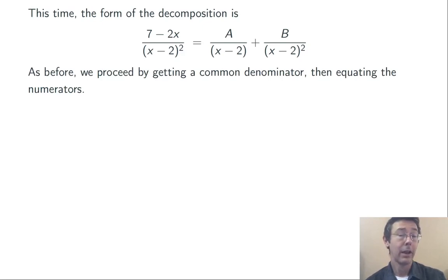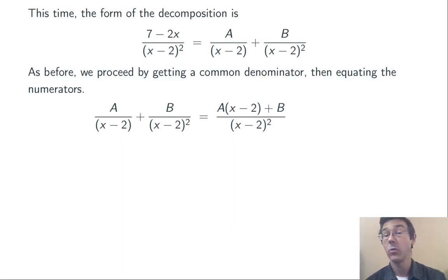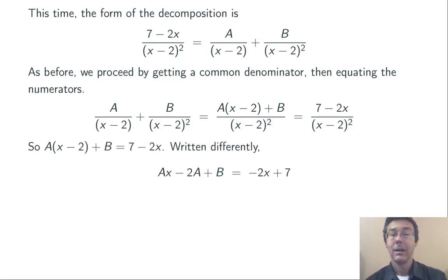Now I'm going to proceed exactly as before. I'm going to get a common denominator and then equate the numerators. So A(x - 2) + B has to equal 7 - 2x. Expanding that out a little bit, distributing the A through, I get this.